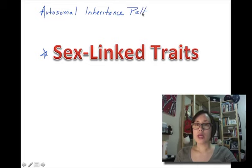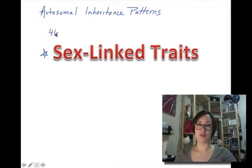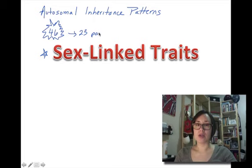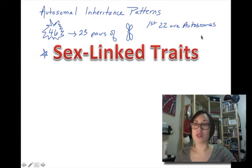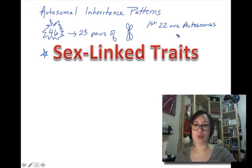Let's talk about what that means. For humans, our magic number is 46, which means that we have 23 pairs of chromosomes. Of those 23 pairs, the first 22 are autosomes, which means they have nothing to do with your sex. All of the inheritance patterns we've talked about so far have to do with genes only found on the first 22 pairs.